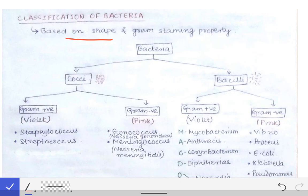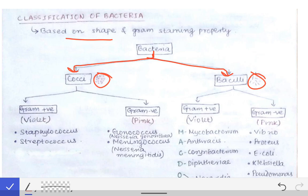On the basis of shape, bacteria are either cocci or bacilli. Cocci are spherical in shape and bacilli are elongated in shape. After classification on the basis of shape, they are classified on the basis of their gram staining property into gram positive and gram negative. Similarly, bacilli are also classified as gram positive or gram negative.